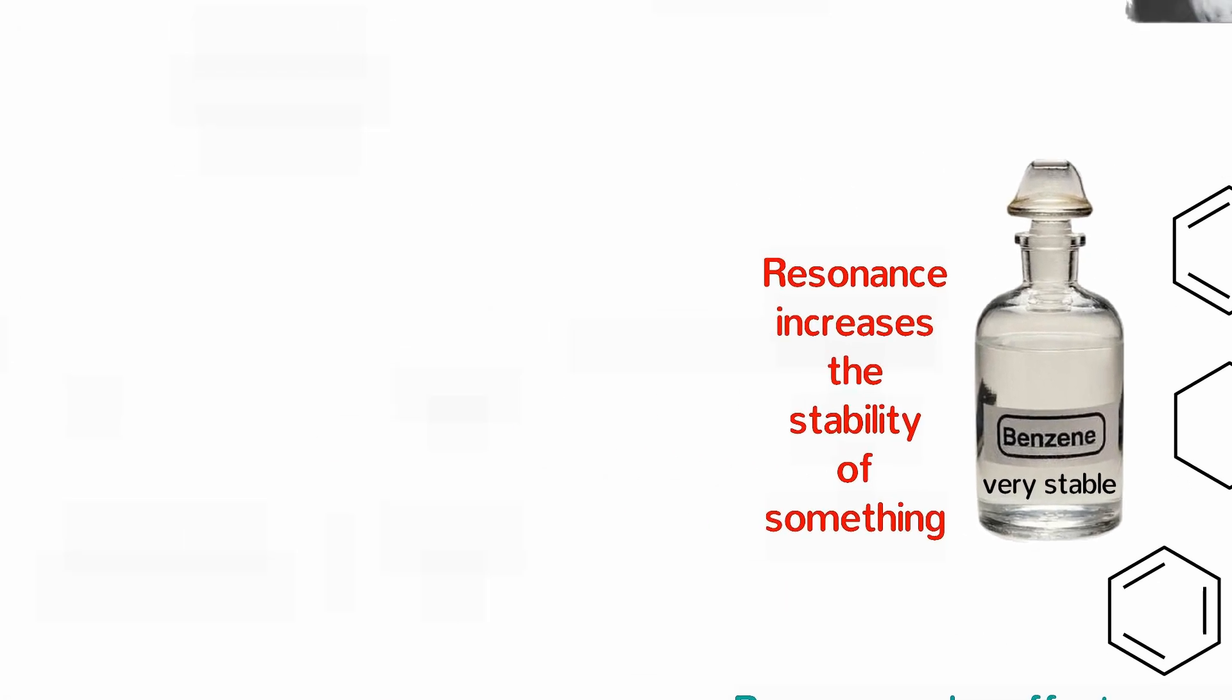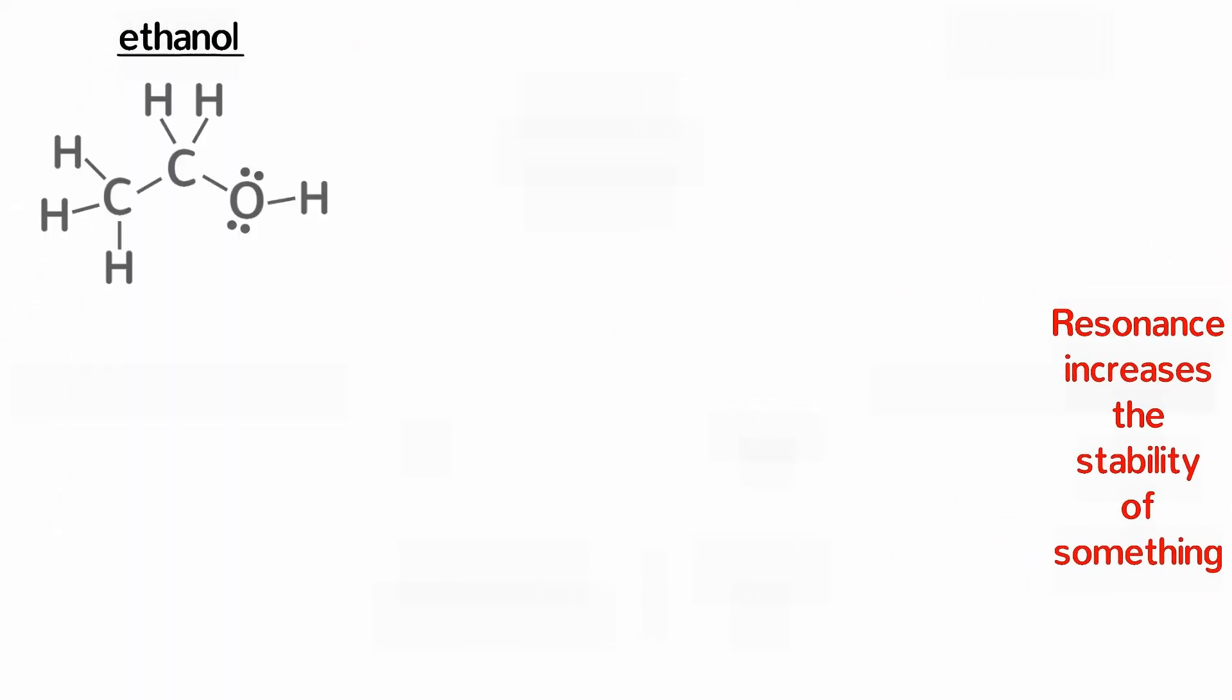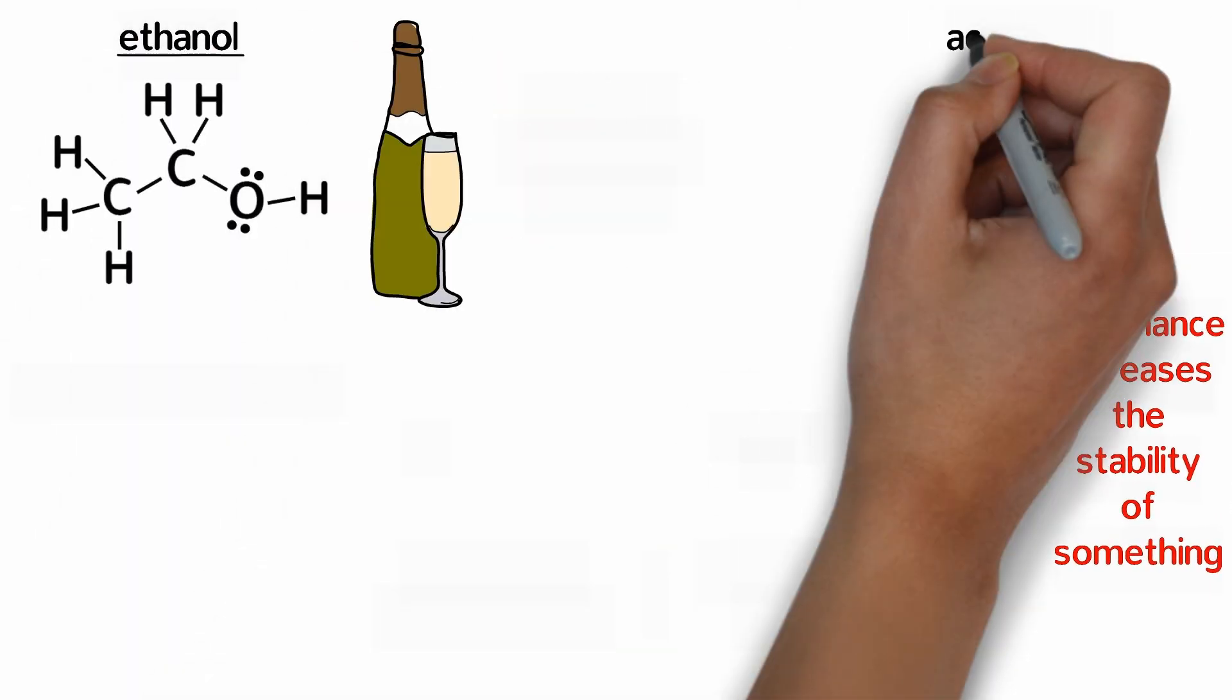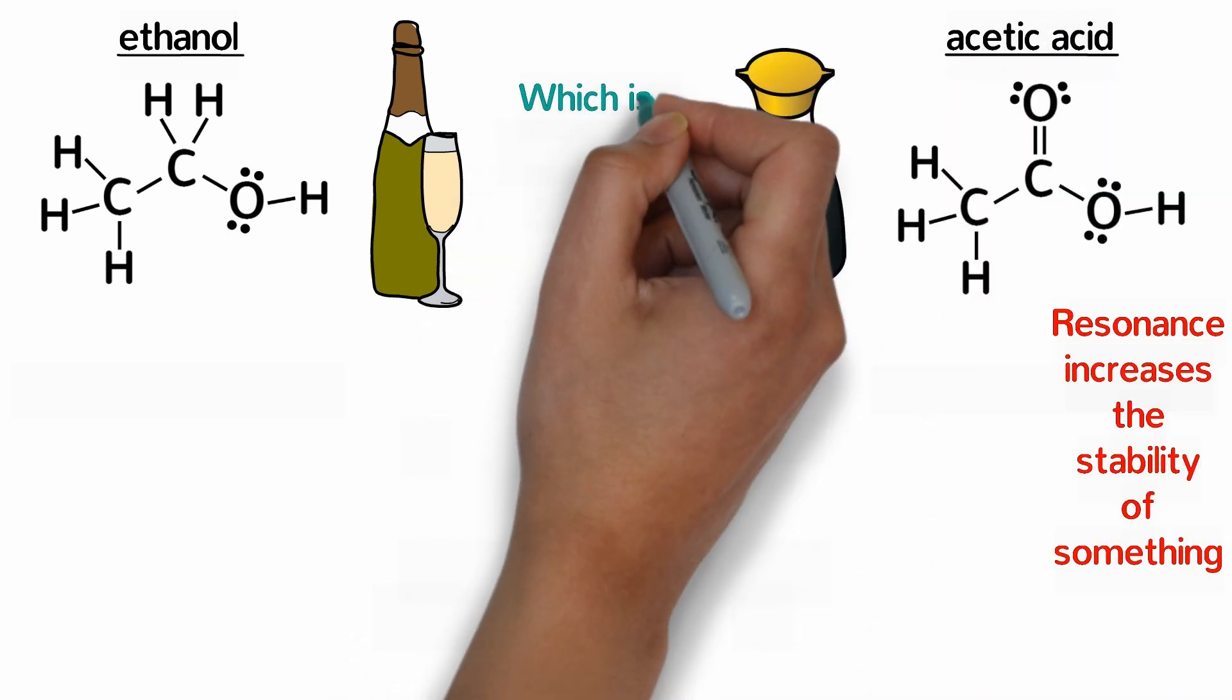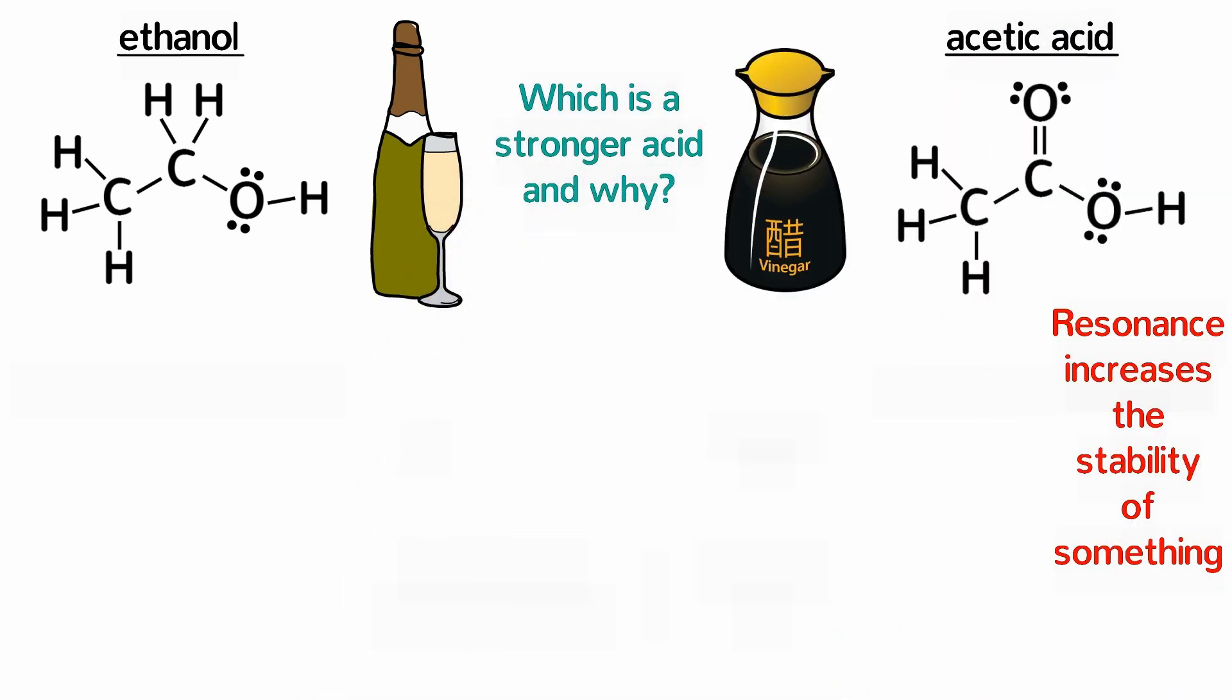Let's consider the following two compounds. Ethanol is the main component of drinking alcohol and acetic acid is the main component of vinegar. Which of them is a stronger acid and why?